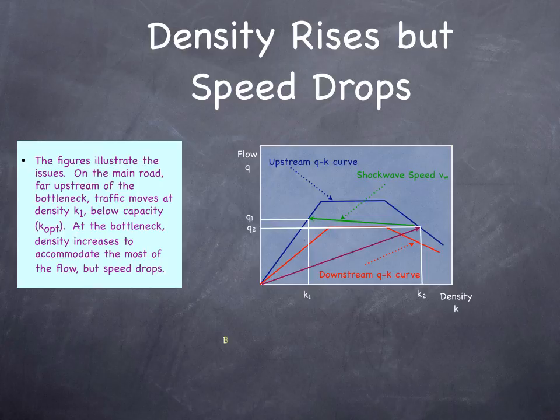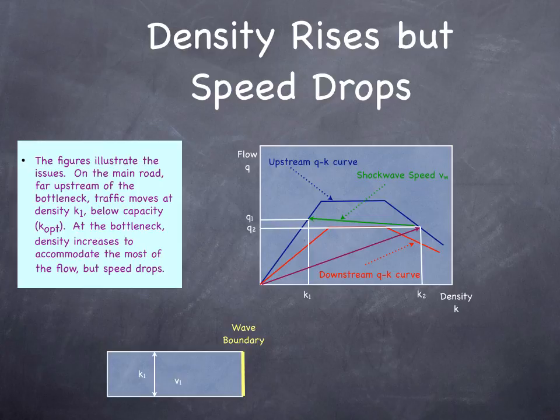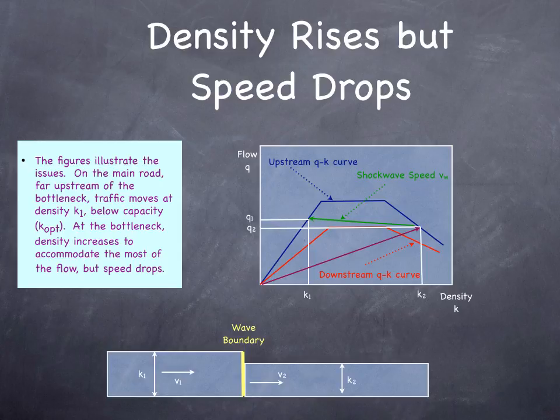What you have is a downstream section where traffic is moving with a particular speed and a particular density. There's a wave boundary, which is moving in the upstream direction. An upstream section where people are going at higher speed and a lower density. Upstream, the driver is happily moving along until she encounters a wave of brake lights. Then she has to slow down. The traffic compresses and continues to move forward. But this point at which they have to slow down and compress is moving backward in space. That's the physics of what's going on.